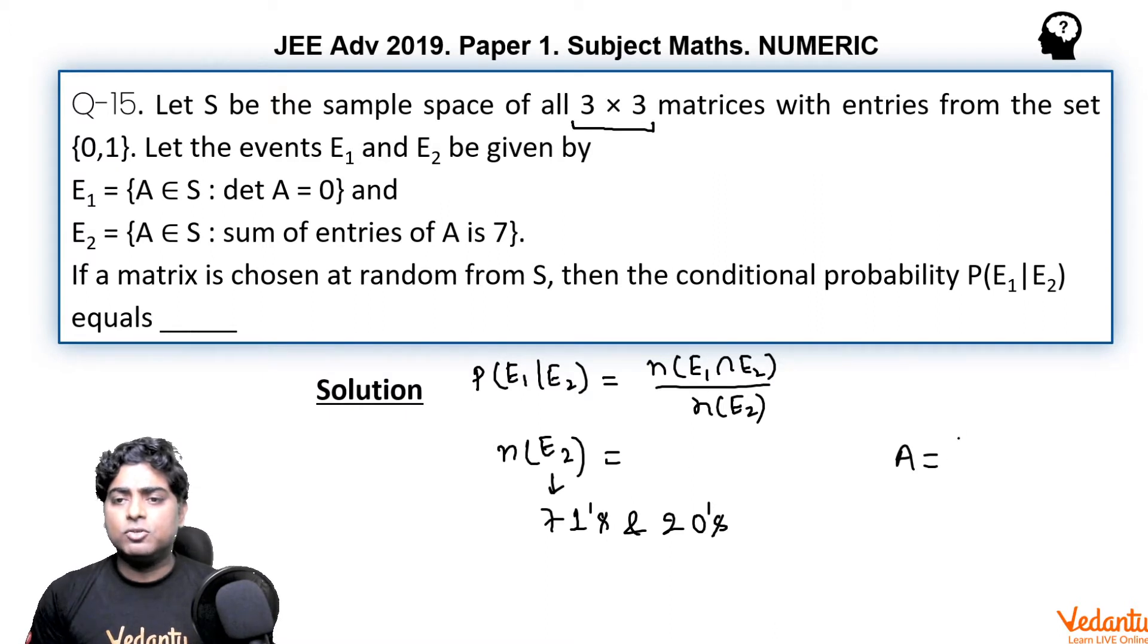For that we need to check carefully the positions where we can place. There are total 9 positions in A. So we need to find 7 positions out of these 9 positions to keep these 7 ones, or you can find 2 places out of these 9 places where we will keep zeros. So in either way you can find this.